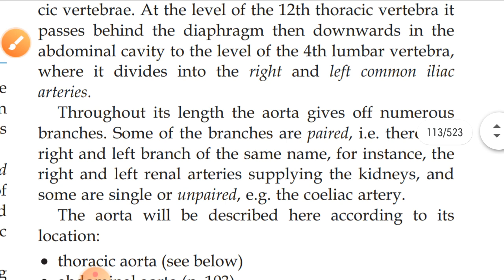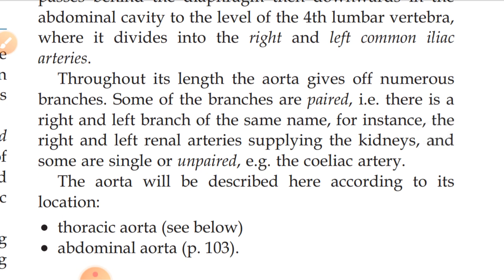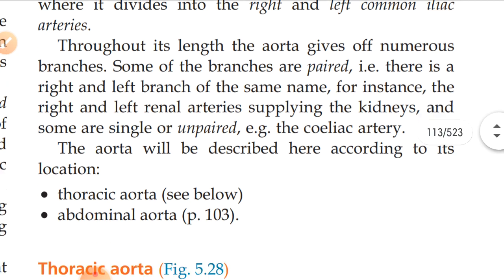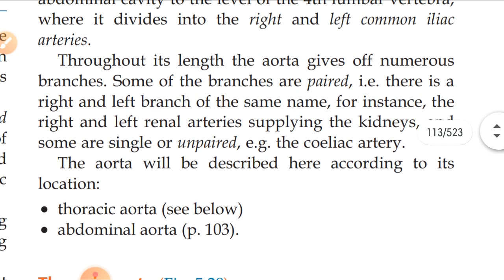Throughout its length, the aorta gives off numerous branches — sometimes paired branches and often unpaired, that is, single branches. According to its location, the aorta is described in two parts: the thoracic aorta and the abdominal aorta.